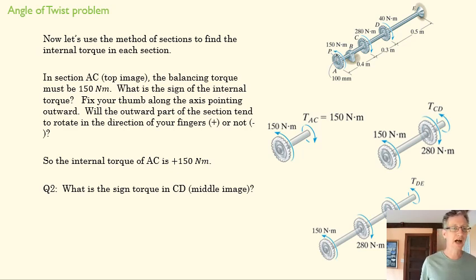Now, what is the sign of the torque in CD? If we did some quick math, that internal torque is going to have to be 130 to make up for the difference between the two applied torques. At the end of this shaft it looks like it's positive, but we want to look at the end of the other side of the section to get the sign.